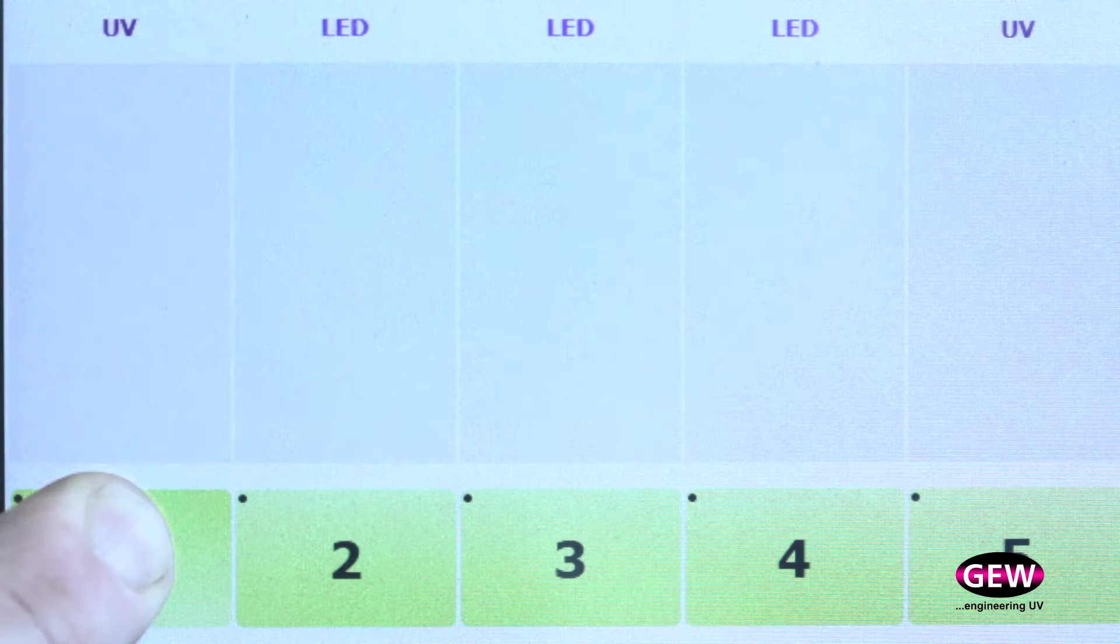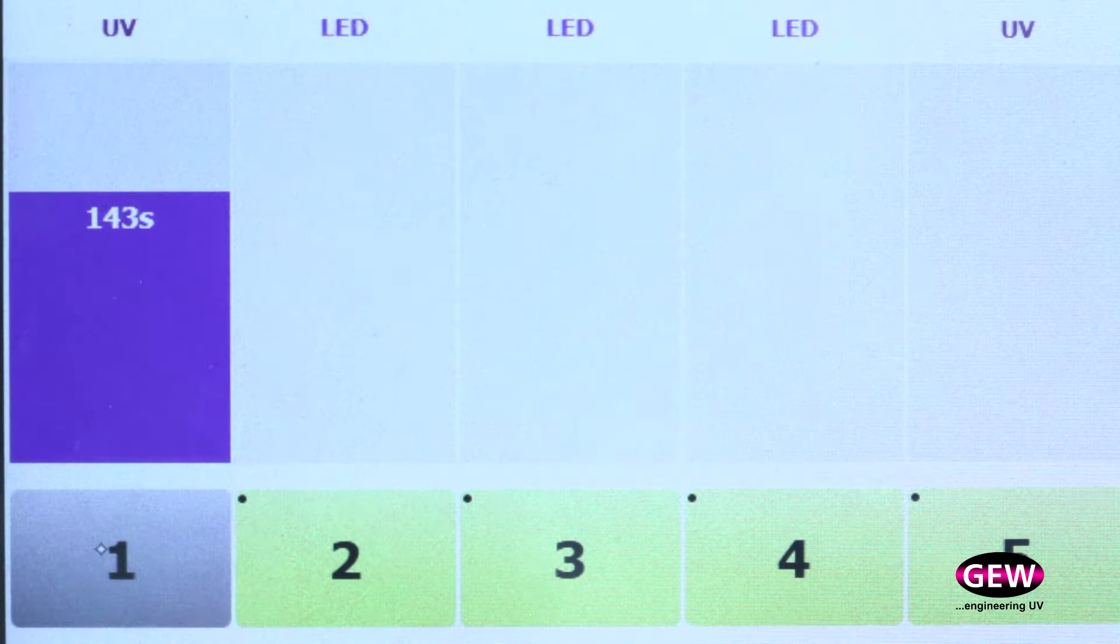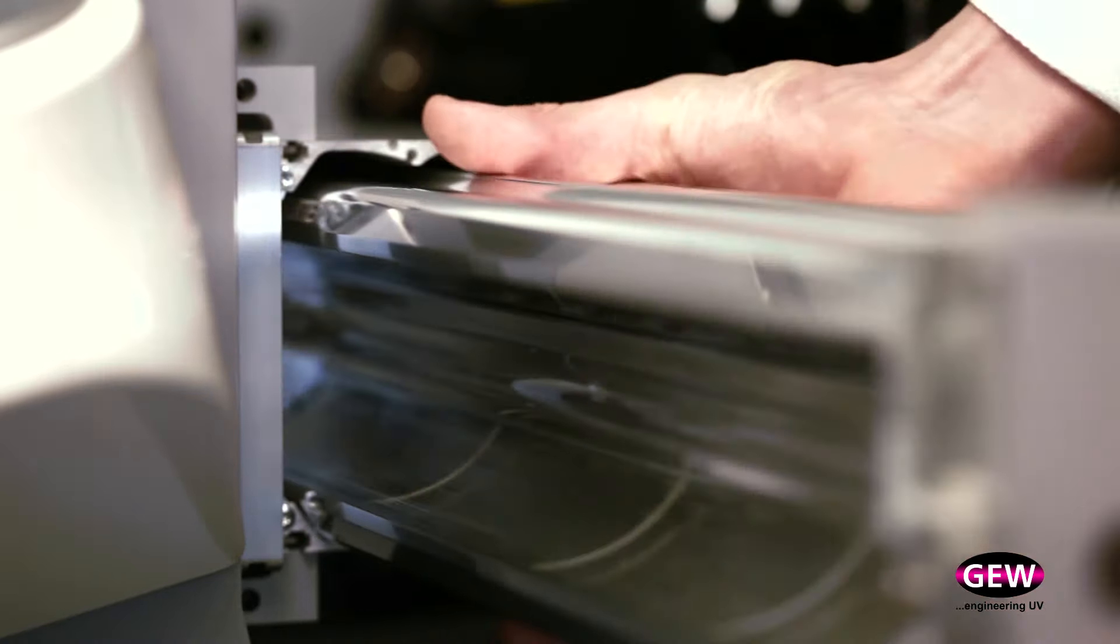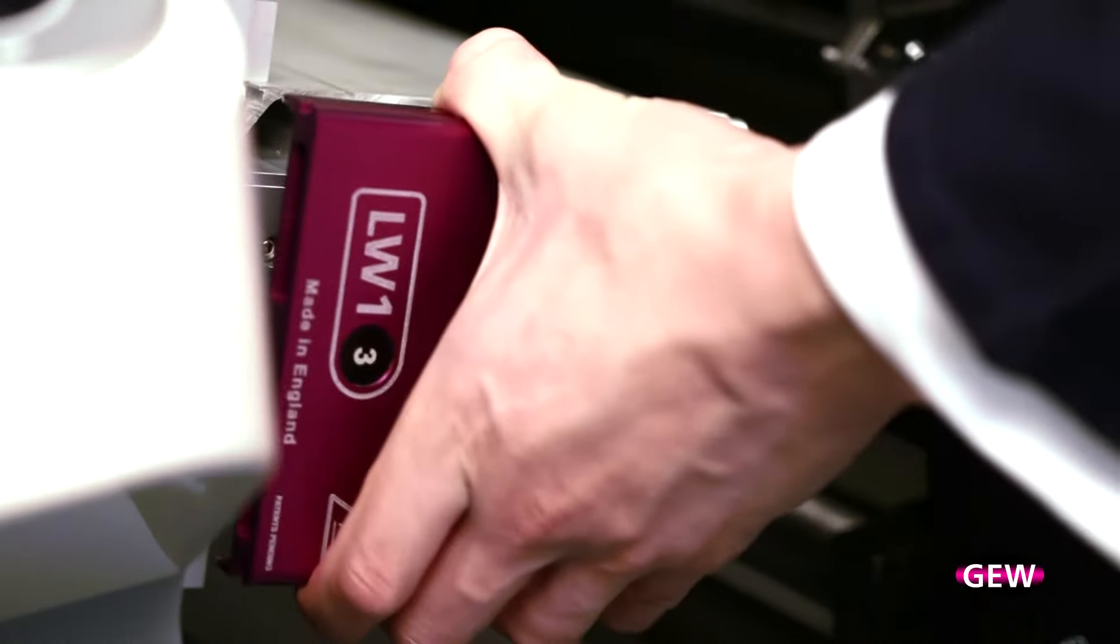Changing over to LED curing is easy. The Arc Lamp is switched off, cooled down, and removed from the housing. The LED cassette is then inserted and the electrical and water connections are made automatically.